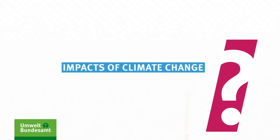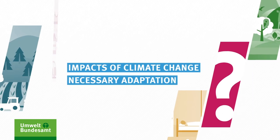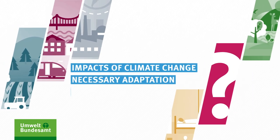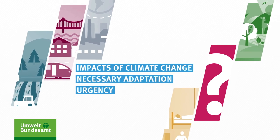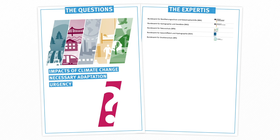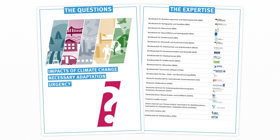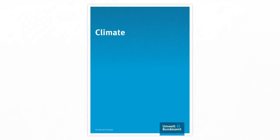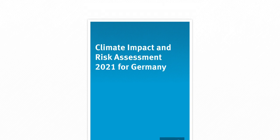How does climate change affect Germany? How can we adapt to reduce the risks? And where do we need to take urgent action? Experts from 25 federal agencies and institutions are working together to tackle these questions. The 2021 Climate Impact and Risk Analysis for Germany identifies five affected areas.